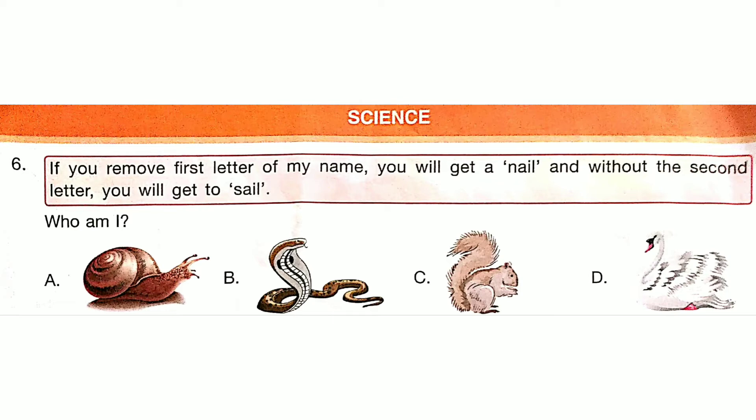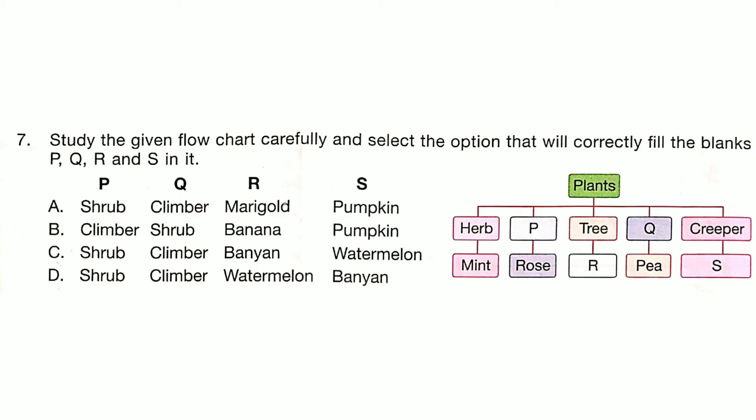If you remove the first letter of my name, you will get a nail, and without the second letter, you will get to sail. Who am I? Answer is Option A: Snail.